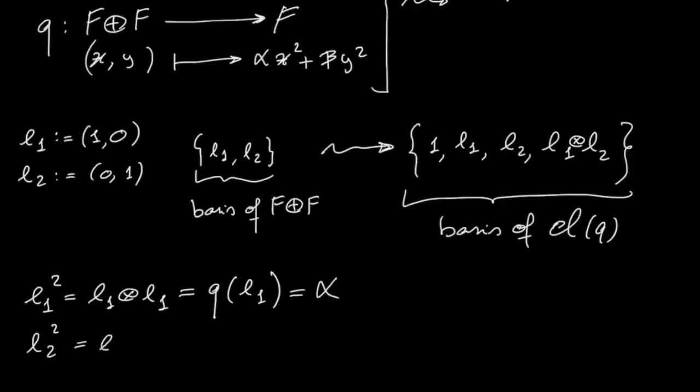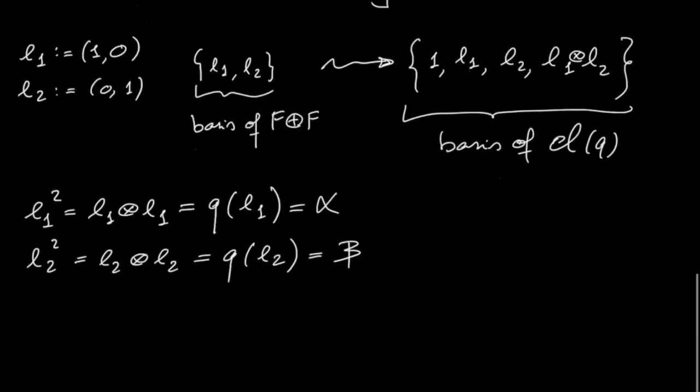Similarly, if you do the square of e2, you know that in the Clifford algebra, this is the evaluation of the quadratic form, and this is beta. So it exactly has the definition of the quaternion algebra,